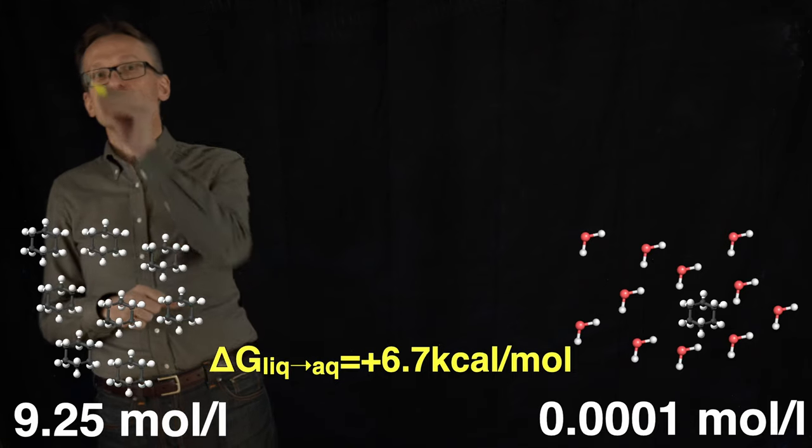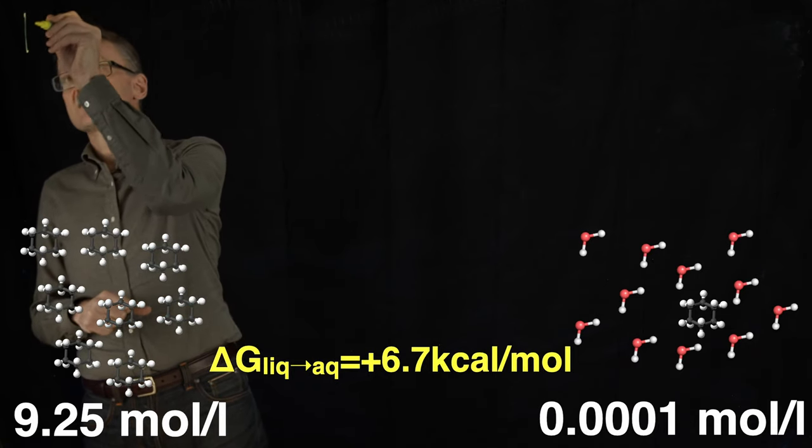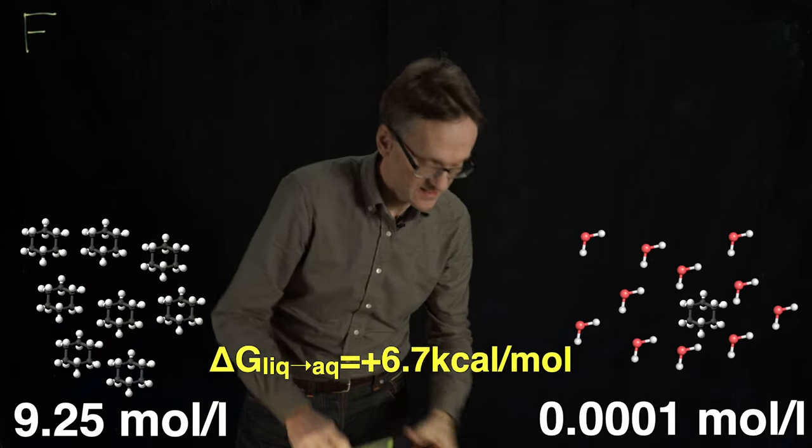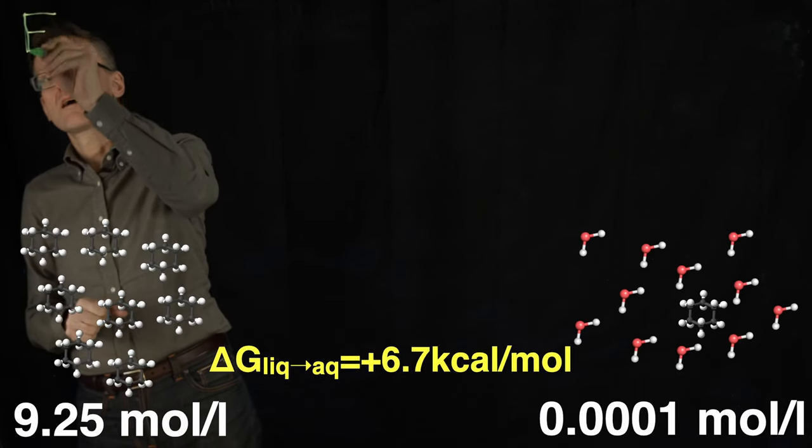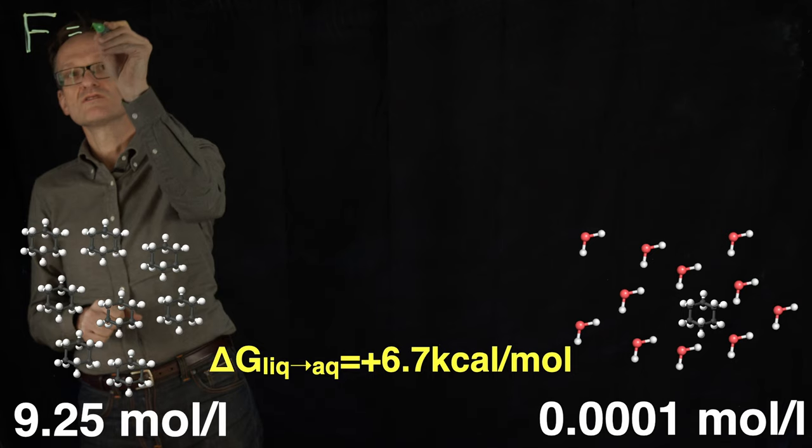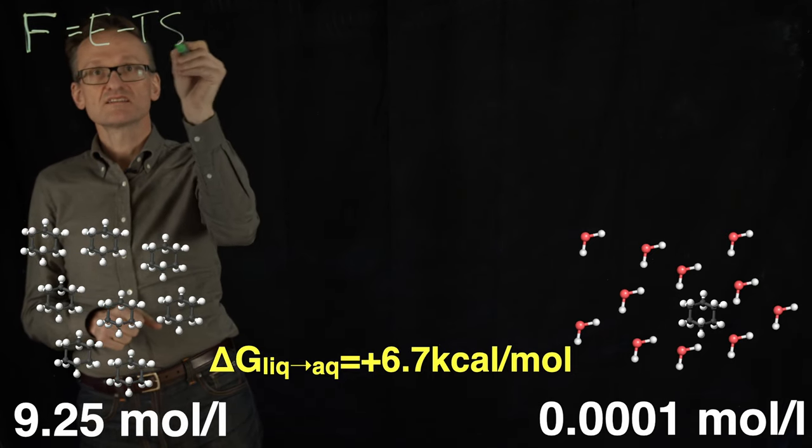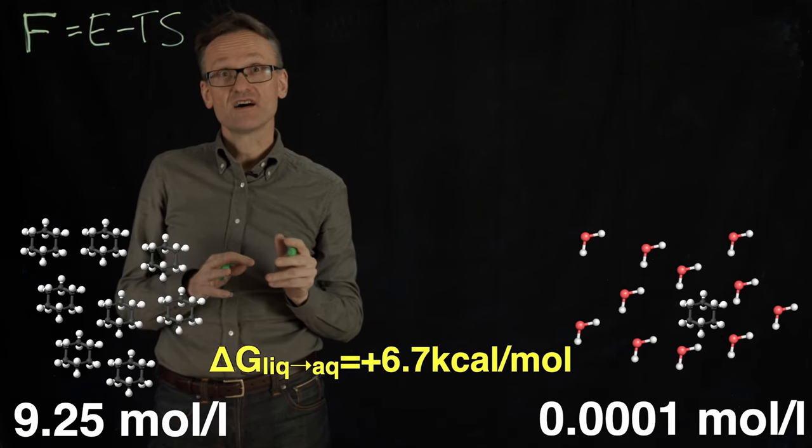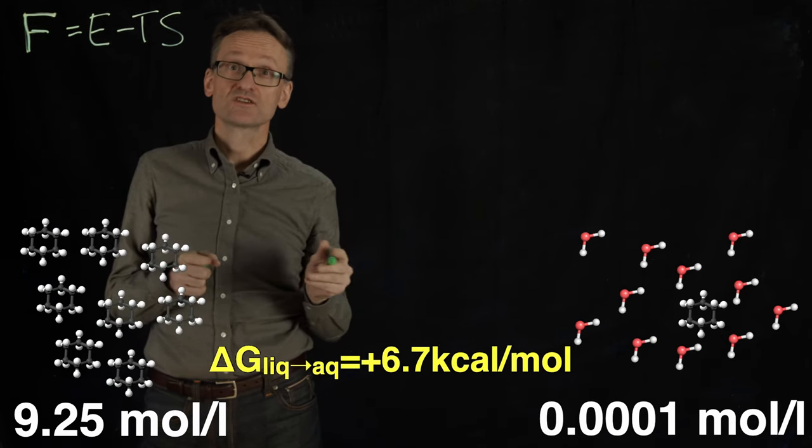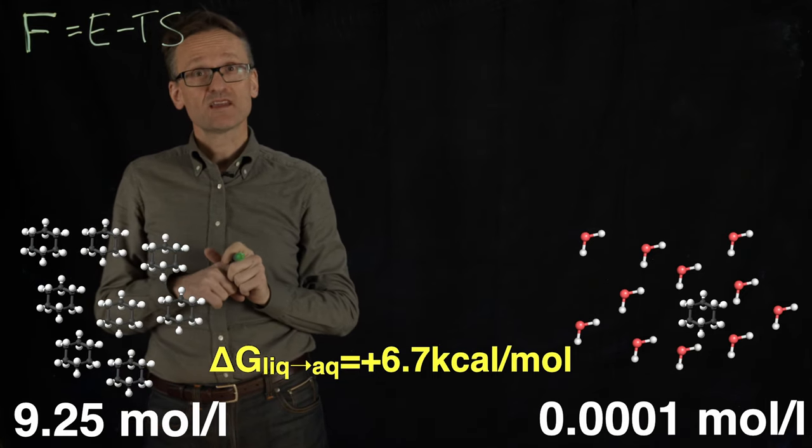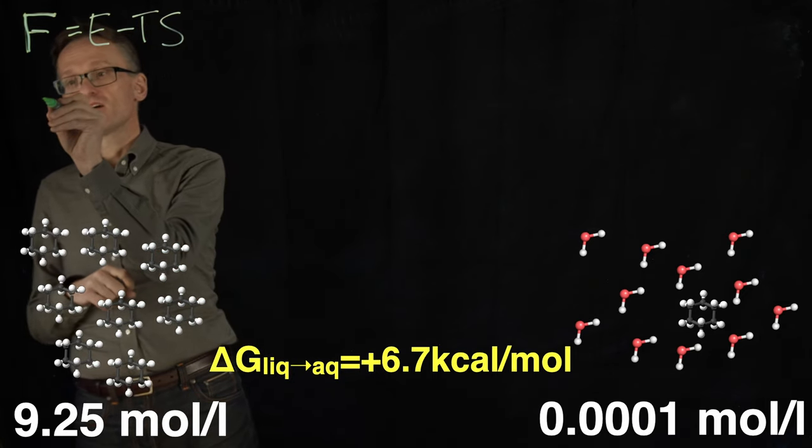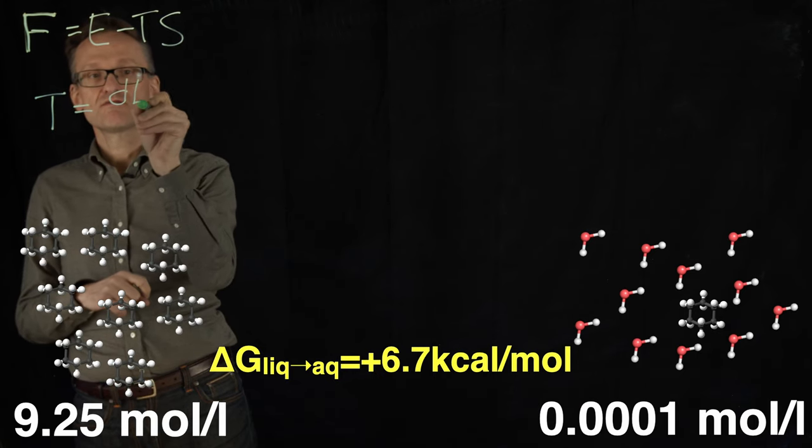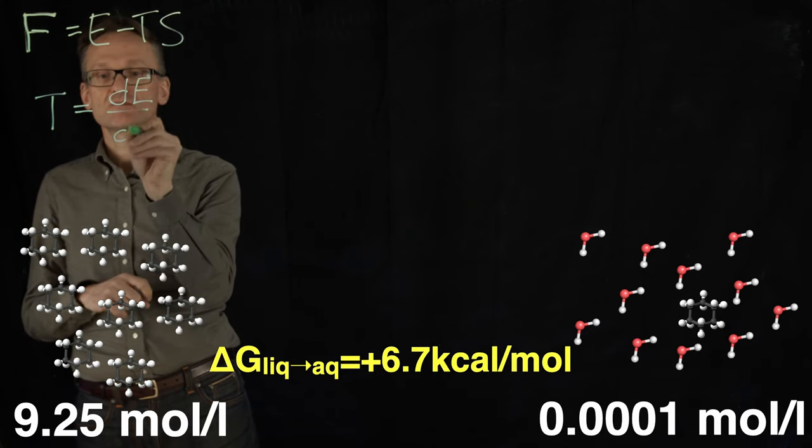But I'm gonna need to use some of my equations. In the last lecture we spent a lot of time on F equals E minus TS. There was also another equation I used to define the thermodynamic definition of temperature. Do you remember what that one was? That was that the temperature was the derivative of the energy with respect to the entropy.